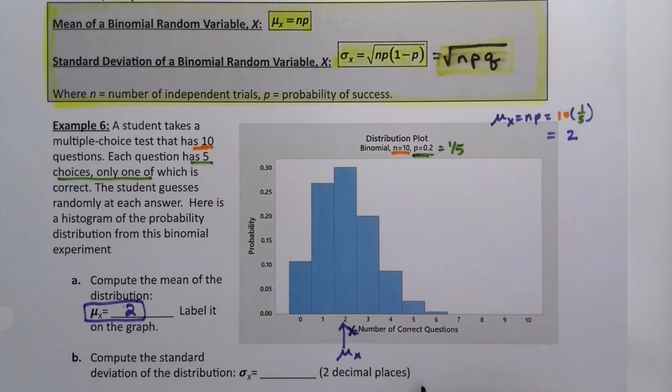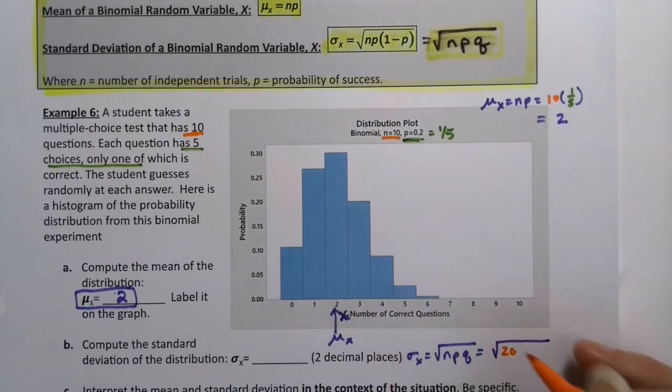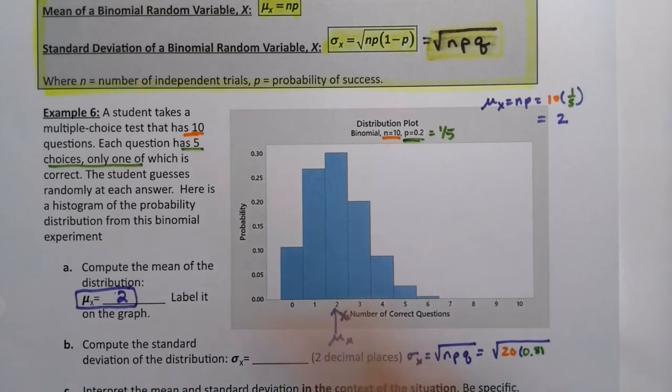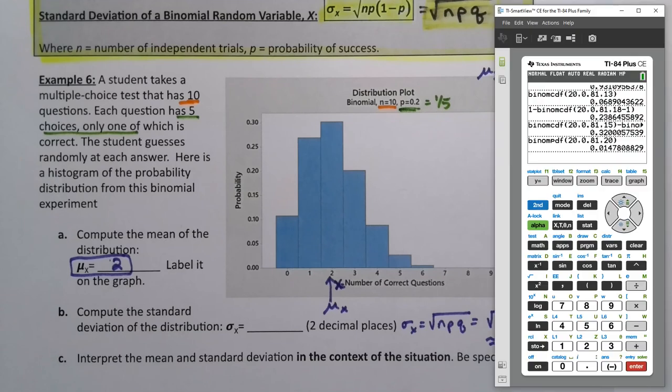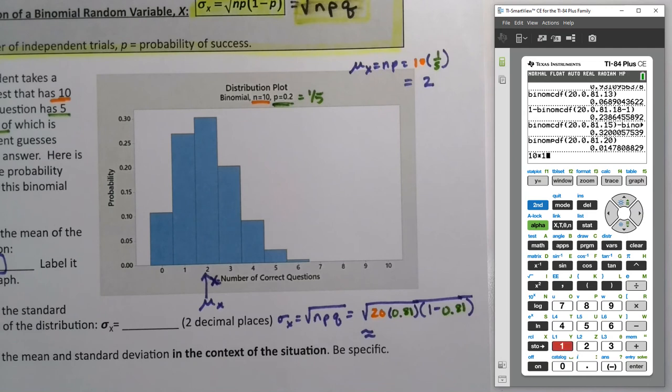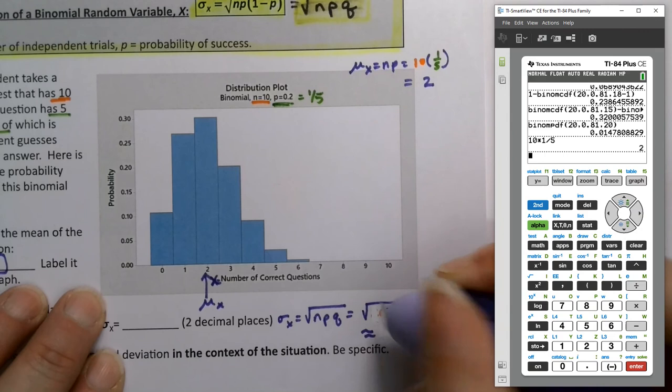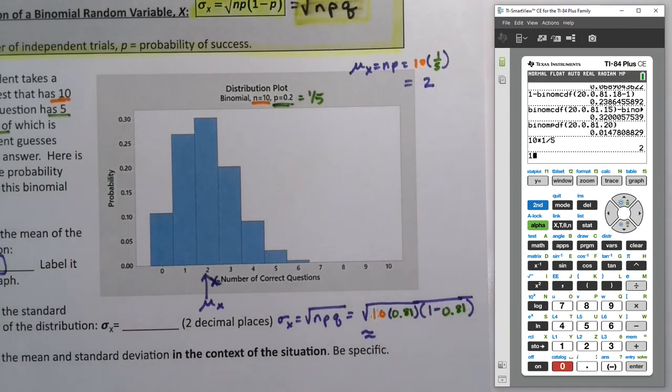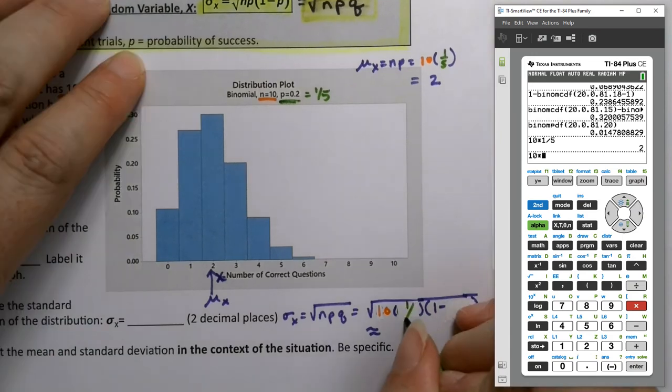The standard deviation, σ sub X, is the square root of NPQ, or N times P times 1 minus P. So that's the square root of 10 times 0.2 times 1 minus 0.2. Wait, I meant 10 here, not 20. I was doing 0.81 from that previous problem. I was still stuck on that coronary bypass problem. Sorry about that.